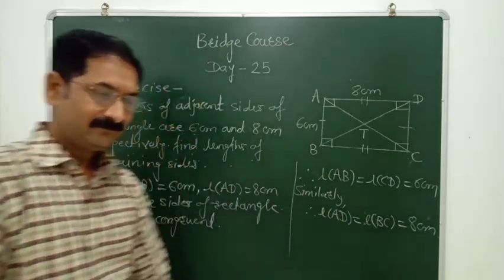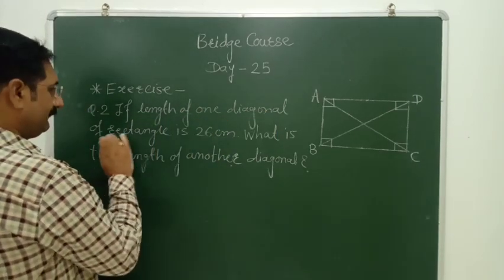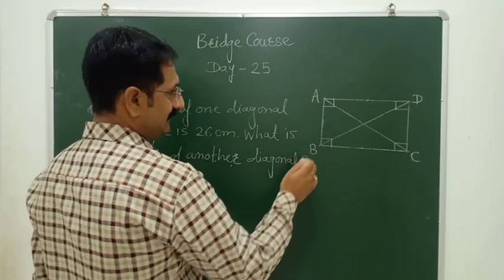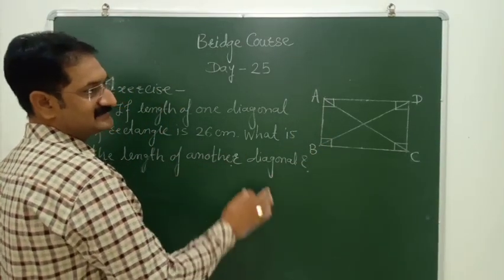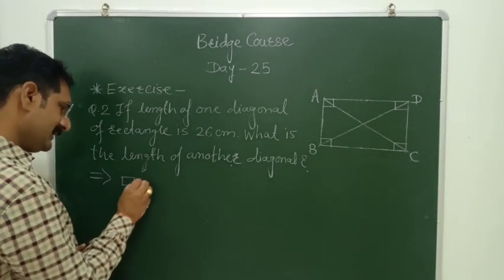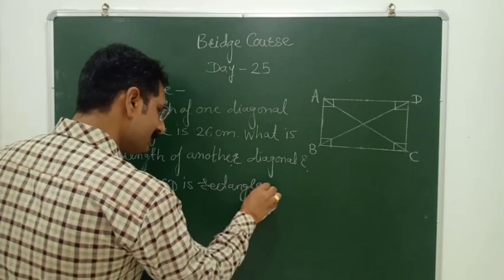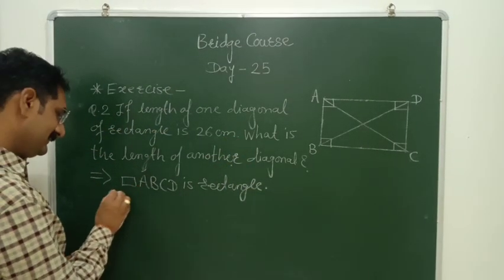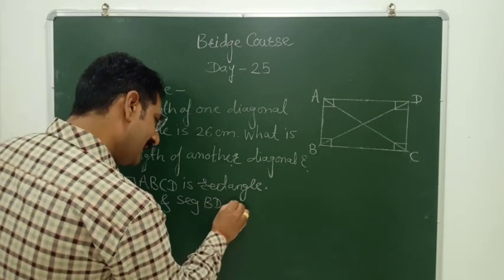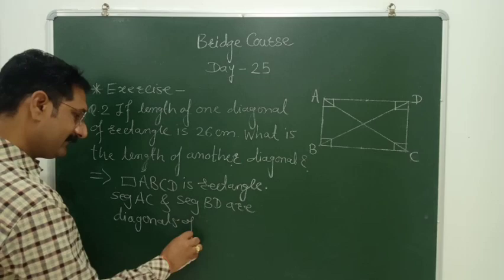Second exercise: If length of one diagonal of rectangle is 26 centimeter, what is the length of another diagonal? Quadrilateral ABCD is rectangle, and rectangle segment AC and segment BD are diagonals of rectangle.